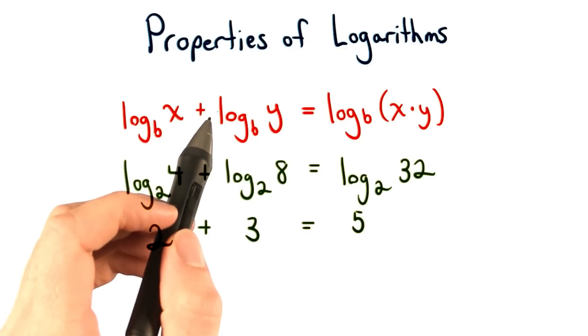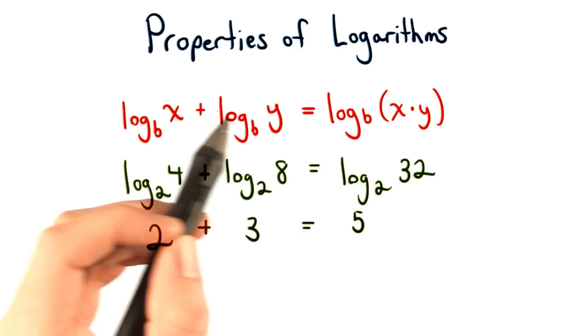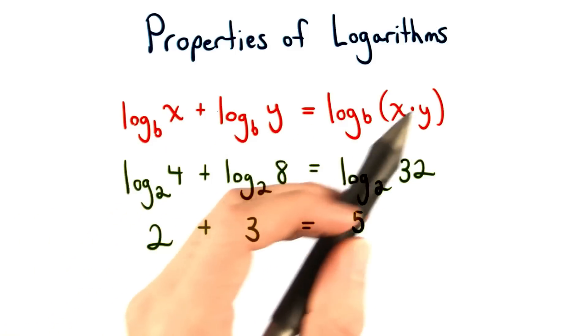So whenever you add logarithms that have the same base, you can really just multiply these arguments together. We just multiply x times y, and then take the log of it.